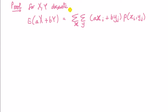So first step, apply the formula. Expected value of Ax plus By, when x and y discrete, is the summation over x and y of the function, this function here, times the probability mass function.